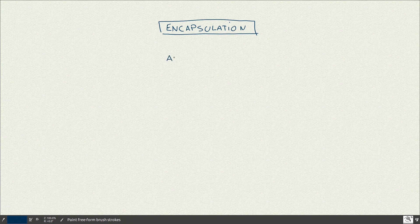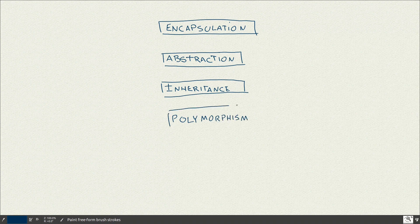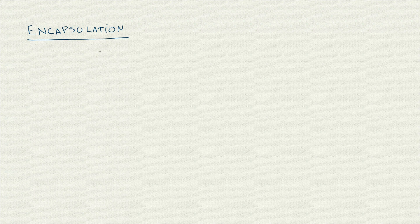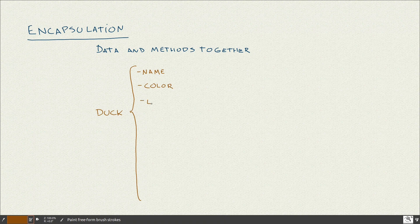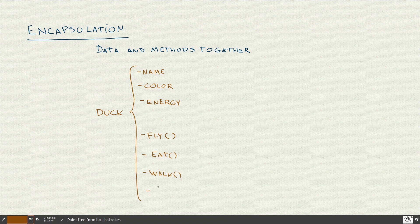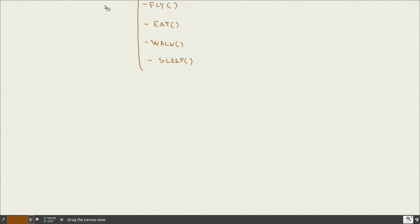Now let's dive into the core concepts of object orientation. There are four concepts: encapsulation, abstraction, inheritance, and polymorphism. Encapsulation is basically tying the data and the methods together, and that way you can restrict or enforce certain rules. For example, let's say we have a class called Dog. This Dog has a name, color, and energy depending on if it's tired or not, and some methods associated with it like fly, eat, walk, or sleep. This is an example of encapsulation because all the data and methods are together in the same class.